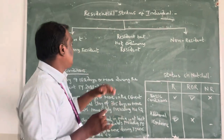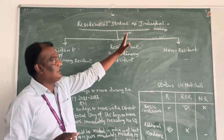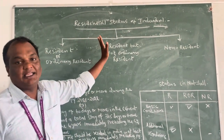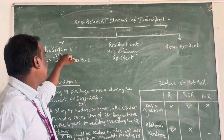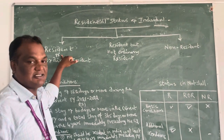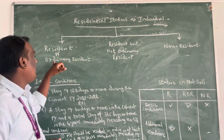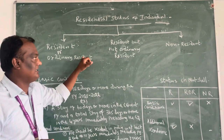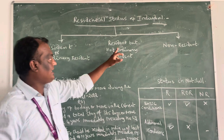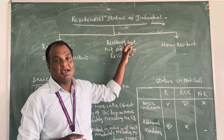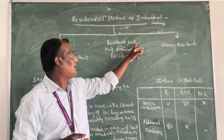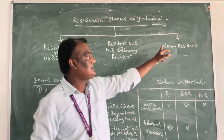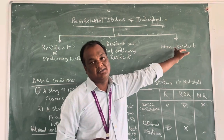The residential status can be classified into three categories. The first category is Resident, also called Ordinary Resident. The second is Resident but Not Ordinary Resident. And the third one is Non-Resident.